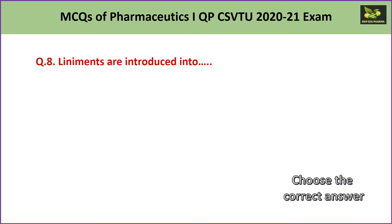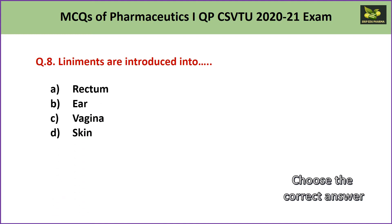Question number 8: Liniments are introduced into A. rectum, B. ear, C. vagina, or D. skin. Liniments are topical dosage forms which are used by rubbing. Hence the answer is D — skin — because they are applied on the skin.